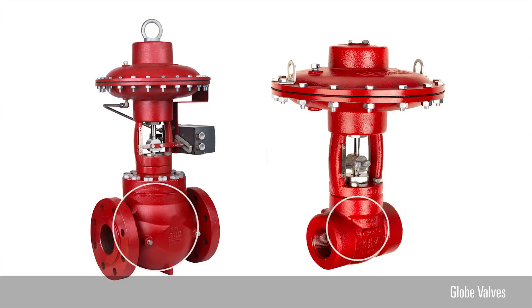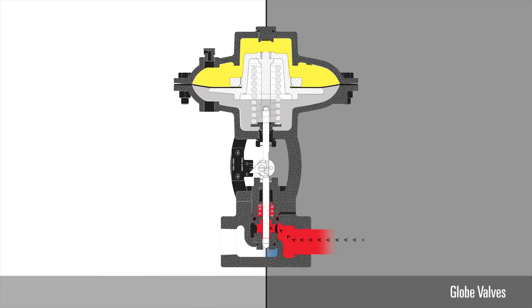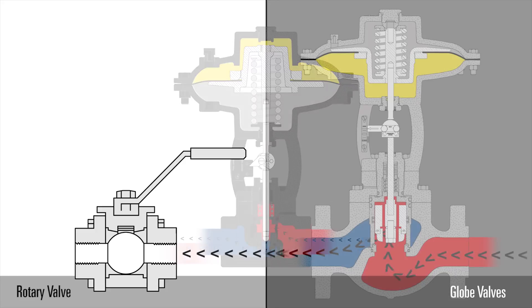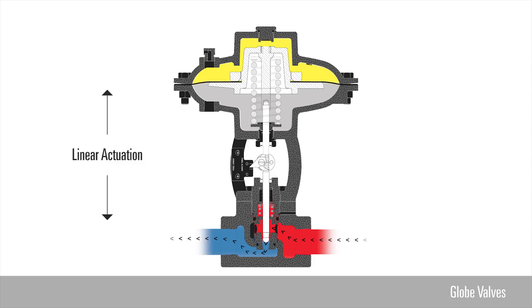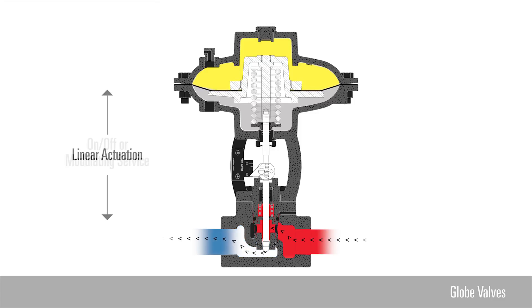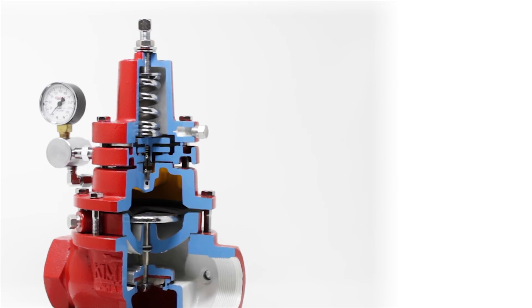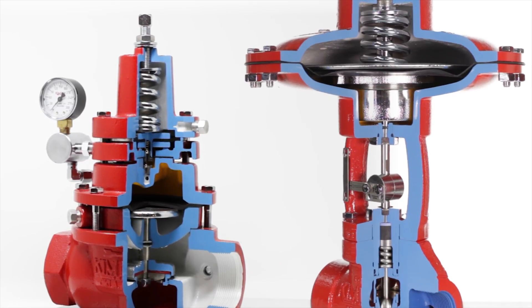Globe valves are named for their spherical bodies. They have two halves separated by an internal baffle or wall causing a different flow path than rotary valves. These valves actuate in a linear movement and provide either on-off or modulating service. Examples of globe valves include Kimray's back pressure regulator and high pressure control valve.